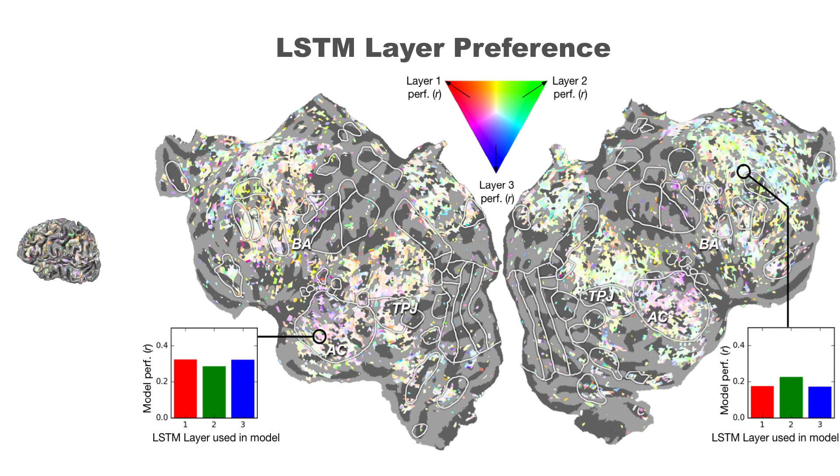Since we extracted vectors from each LSTM layer separately, we could also see which layer best predicts different areas in the brain. We find that the middle LSTM layer predicts high-level language areas well, and the lower-level areas prefer the input and output layers. This suggests that the middle LSTM layer is probably learning high-level representations, while the input and output layers are learning low-level representations.